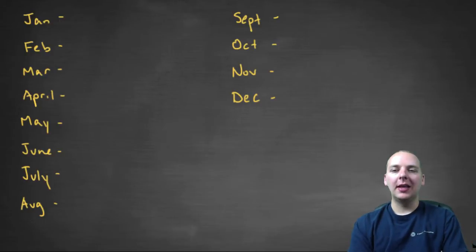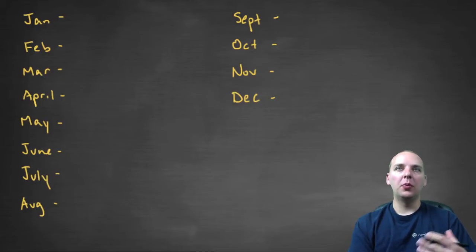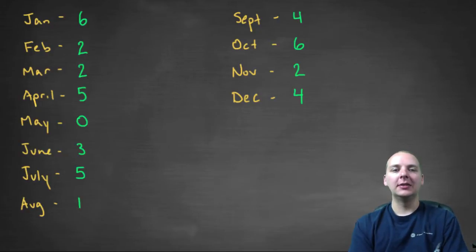So every month has a number associated with it. This is probably one of the biggest places where you actually have to memorize something. Because every month has a different number of days in it, this just has to be memorized, and I'll give you some mnemonic devices to help you memorize this. This is what might take you a little bit of time, 20, 30 minutes to actually maybe make some flashcards and actually go through and memorize each of these.